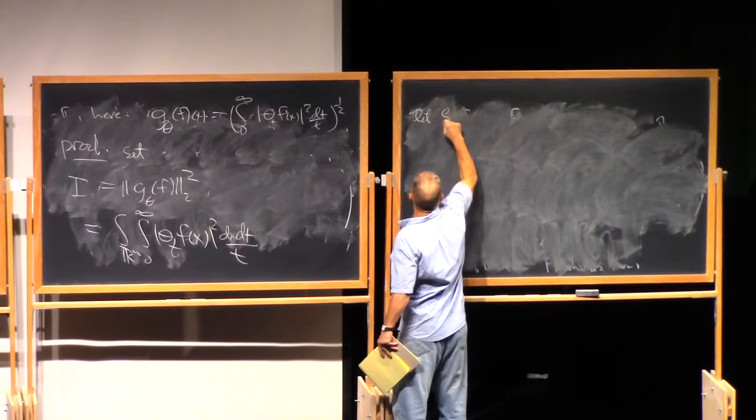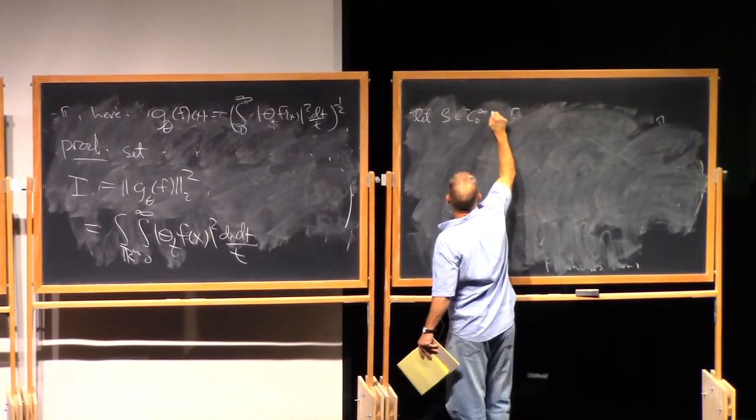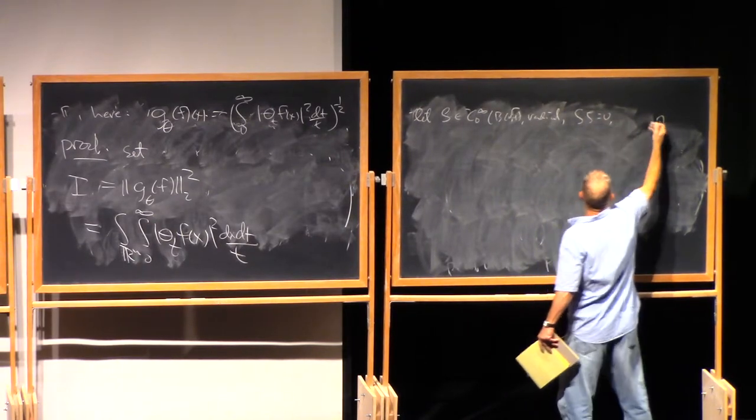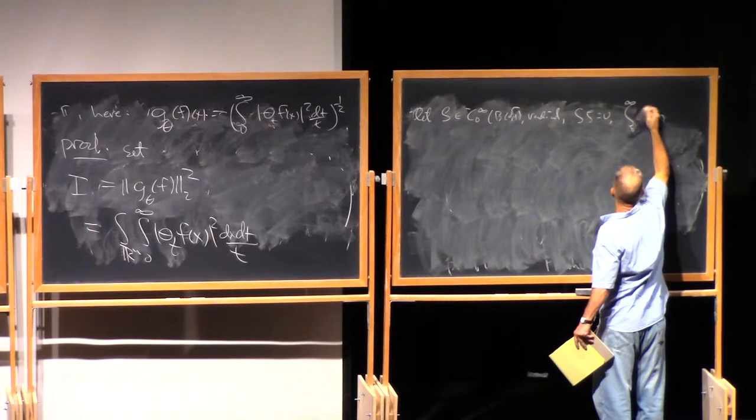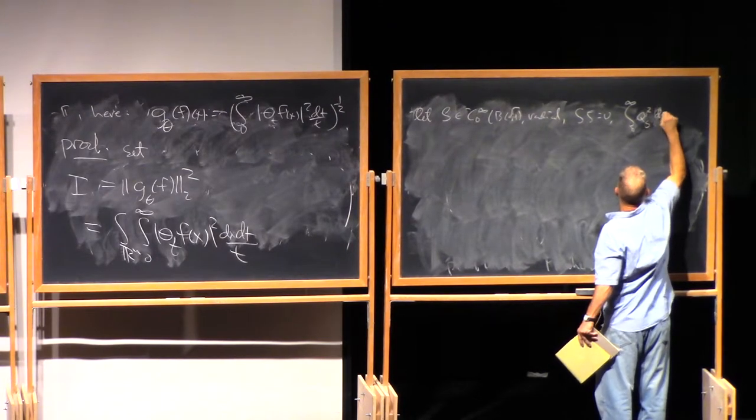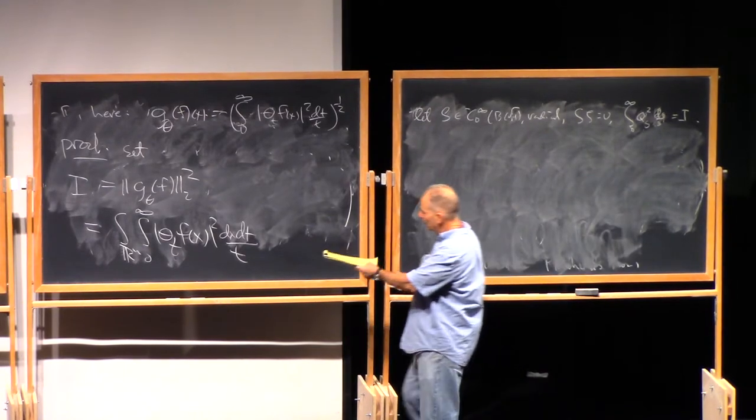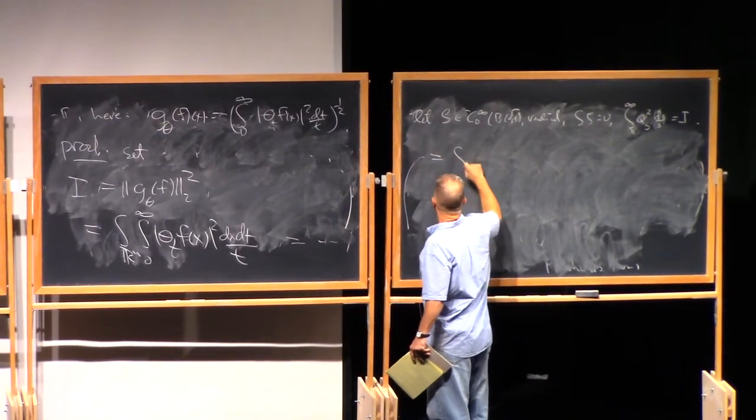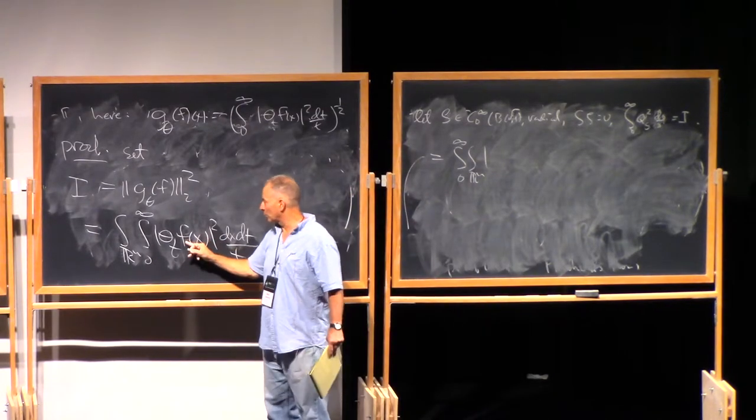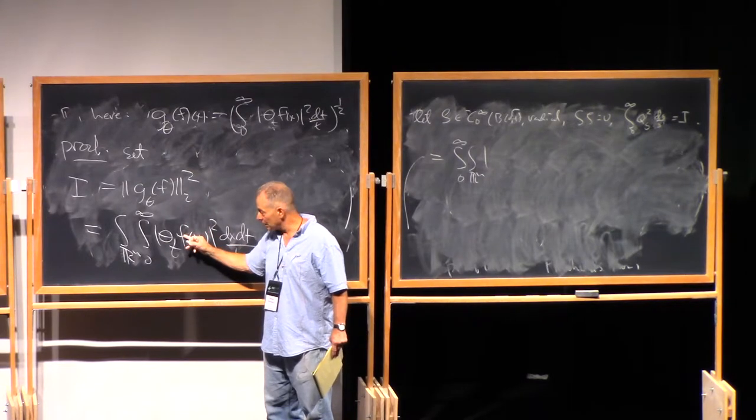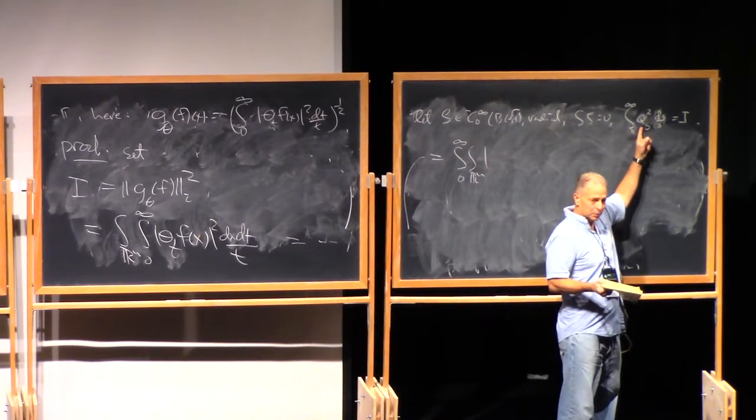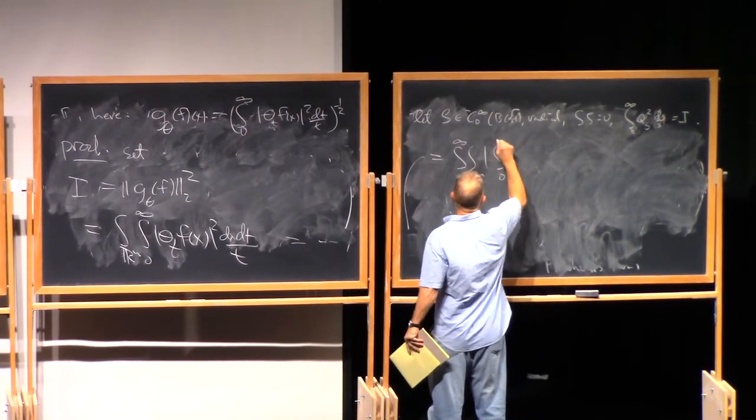So, at this point, we're going to use this Calderon reproducing formula. So let zeta be C_0 infinity of the unit ball, radial, integral of zeta equals 0 and satisfying the Calderon reproducing formula, which we can always do if this is non-trivial after normalization. So then, this is the same as integral 0 to infinity, integral on Rn. I expand f as the integral of Q_s squared f integrated from 0 to infinity, ds over s. And the integral interchanges with this L2-bounded operator. It interchanges with L2-bounded operators because this convergence is in the strong operator topology on B of L2.